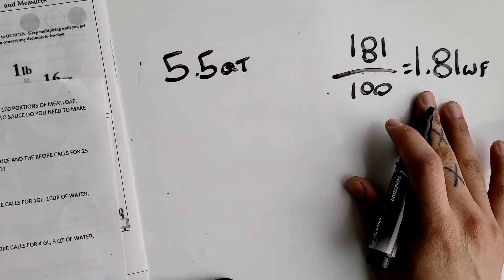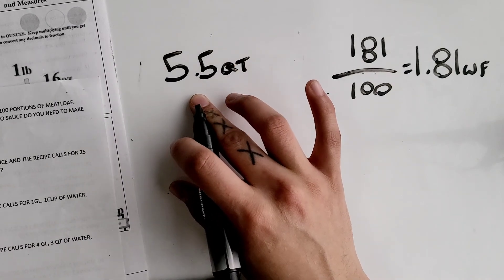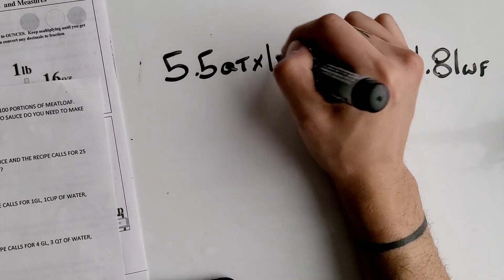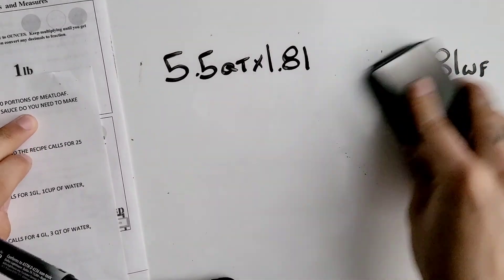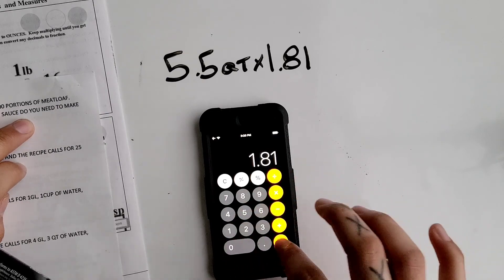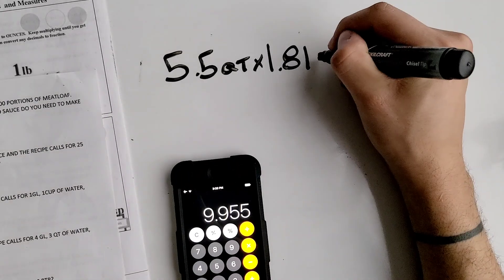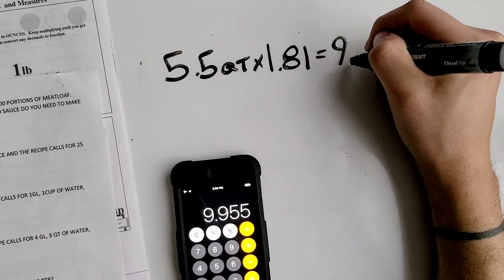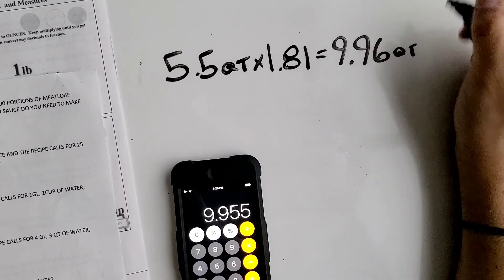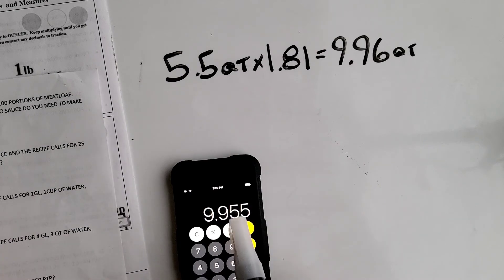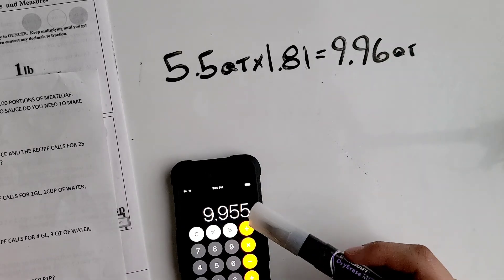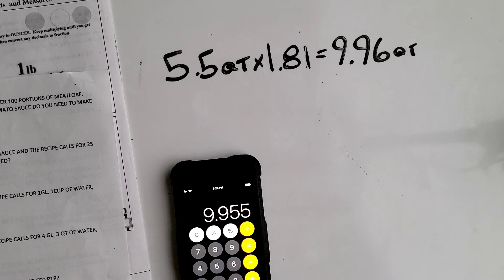After we find our working factor, we have to multiply it by our 5.5 quarts of the tomato sauce. So 5.5 times 1.81 equals 9.96 quarts. The reason for that is because we're rounding to the hundredths place. If this third number is 5 or above, we have to round up, which I just did.